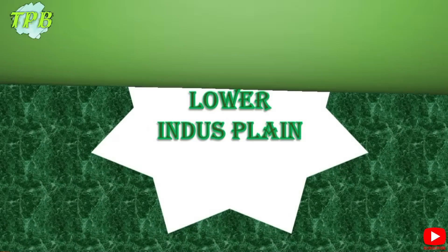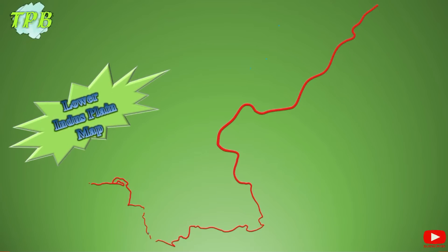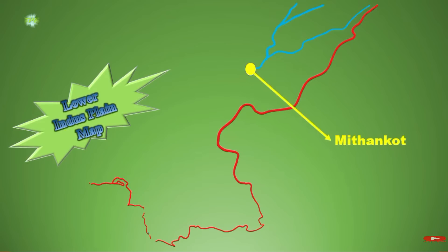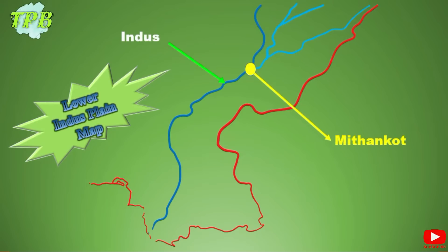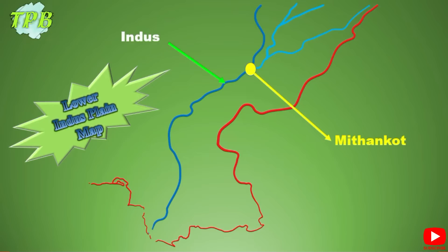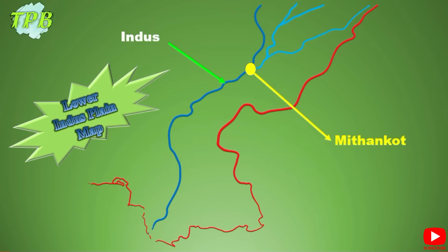Moving on to the Lower Indus Plain. In this plain, the eastern tributaries of River Indus had already confluenced at Mithankot. From Mithankot southwards, River Indus flows alone — so from Mithankot southwards we have the Lower Indus Plain. There are no more additions or confluences into River Indus in the Lower Indus Plain.